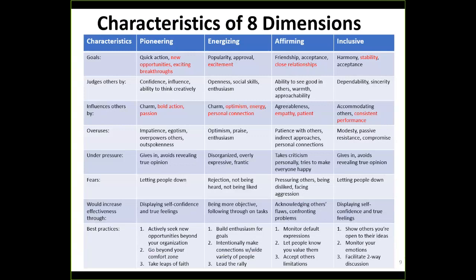Let's look at two of the eight dimensions of leadership. The first is Energizing. Someone with this dimension is optimistic, charming, and full of energy, but under pressure can become disorganized and a little frantic. Best practices they exhibit include building enthusiasm with teammates, making connections, building relationships with a variety of people, and leading the rally — being the cheerleader in the organization.